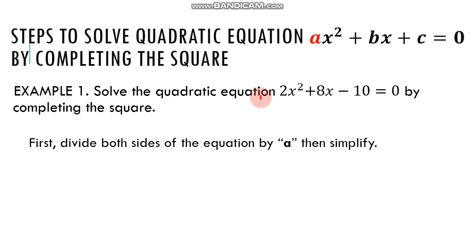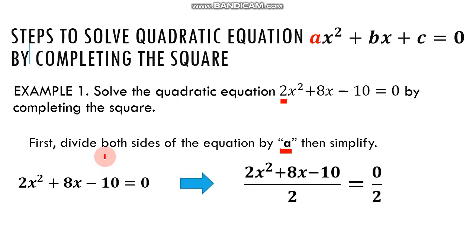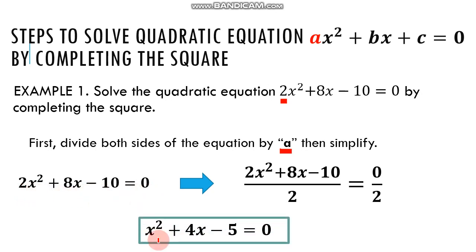First, divide both sides of the equation by a. Our a for this example is 2, and then simplify. 2x squared plus 8x minus 10 equals zero — divide both sides by 2. 2 divided by 2 is 1, 8 divided by 2 is 4, negative 10 divided by 2 is negative 5, and 0 divided by 2 is 0. The simplified form is x squared plus 4x minus 5 equals 0.